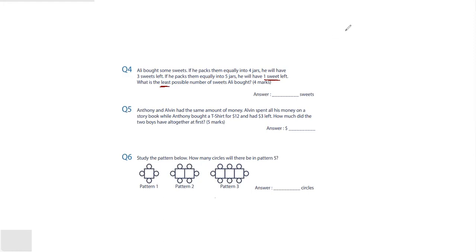If he packs them equally into 5 jars, he will have 1 sweet left. For example, if you look at multiples of 5, let's start with 5, 10, and 1 is left. So we do plus 1. So 6, and 11. Let's just try for this. If you divide 6 by 5, you'll have 1 left. If you divide 6 by 4, you'll have 2 left. So this is not meeting the criteria.